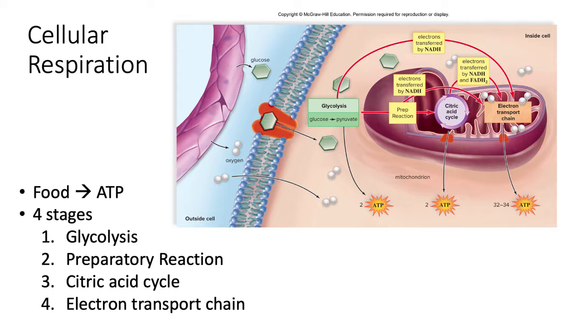There are four stages to cellular respiration: glycolysis, preparatory reaction, citric acid cycle, and the electron transport chain. Let's talk about each of them.